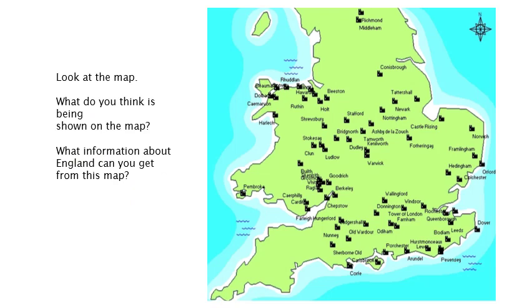I want you to just have a little look at this map. You can see it's asking you two questions: what do you think is being shown on the map? It's fairly obvious - I'm pretty sure you guys have worked out from what the symbols look like and what it is that we're studying. You could make a guess that these are castles - and yes, these are all castles that William built.